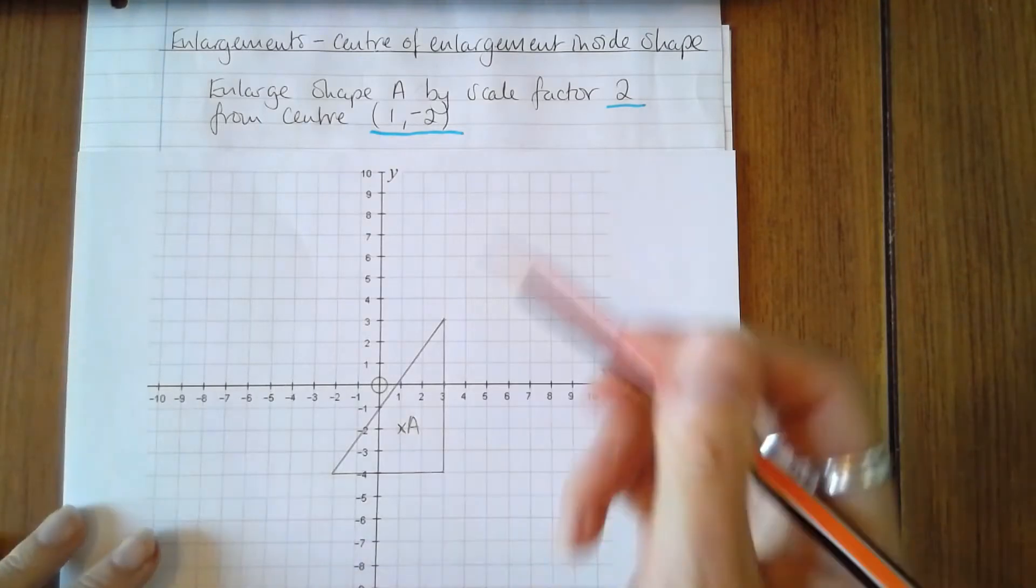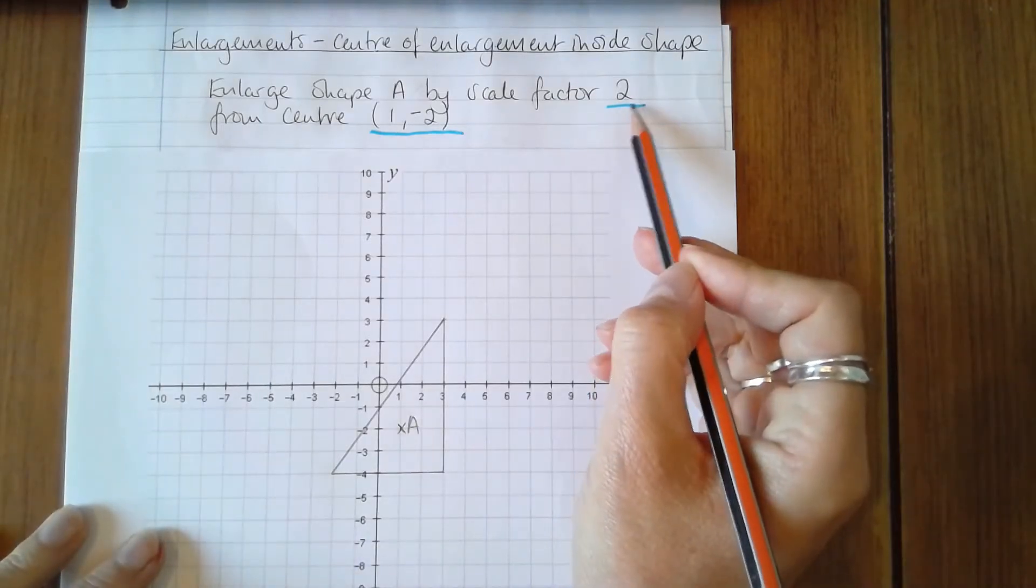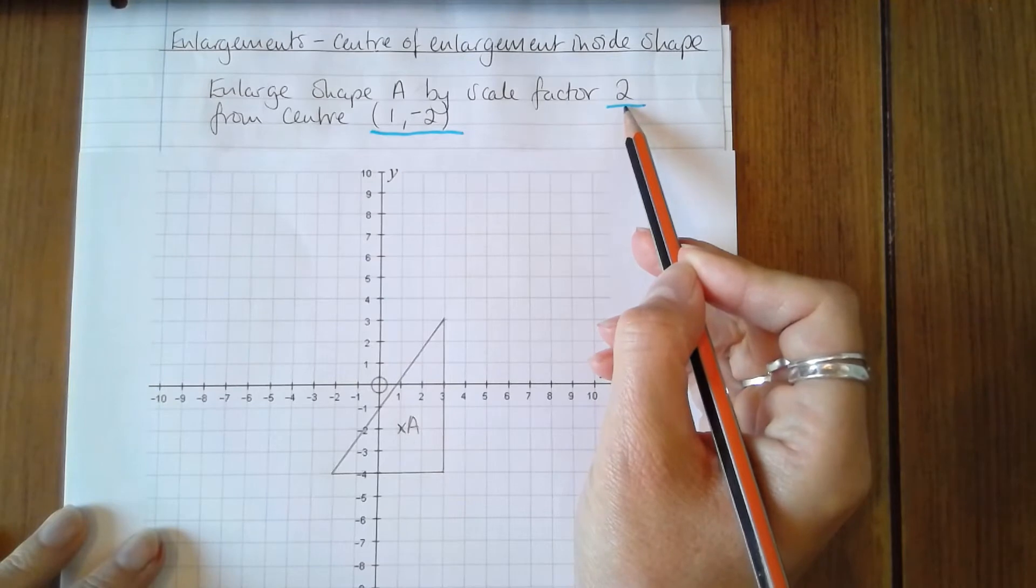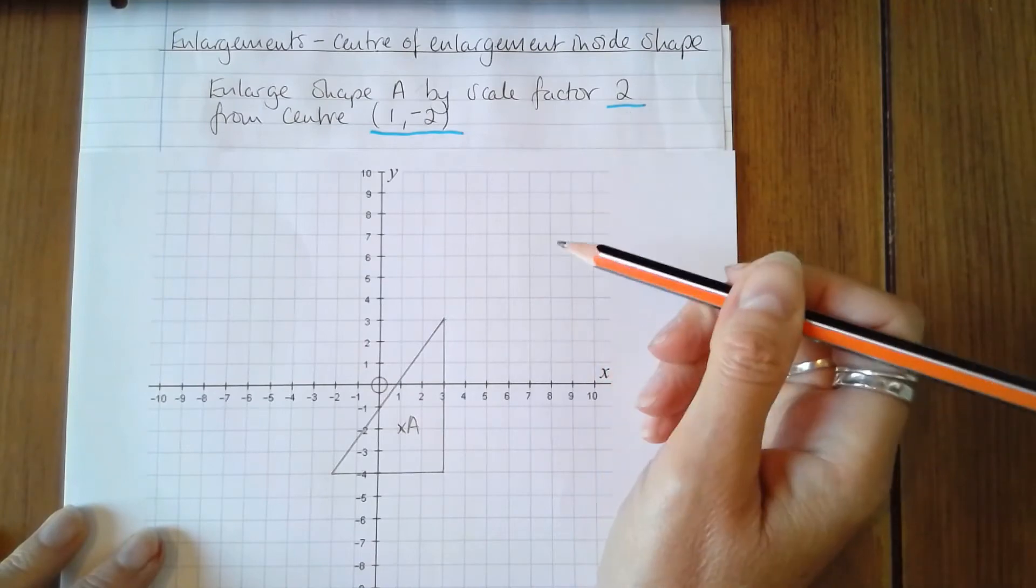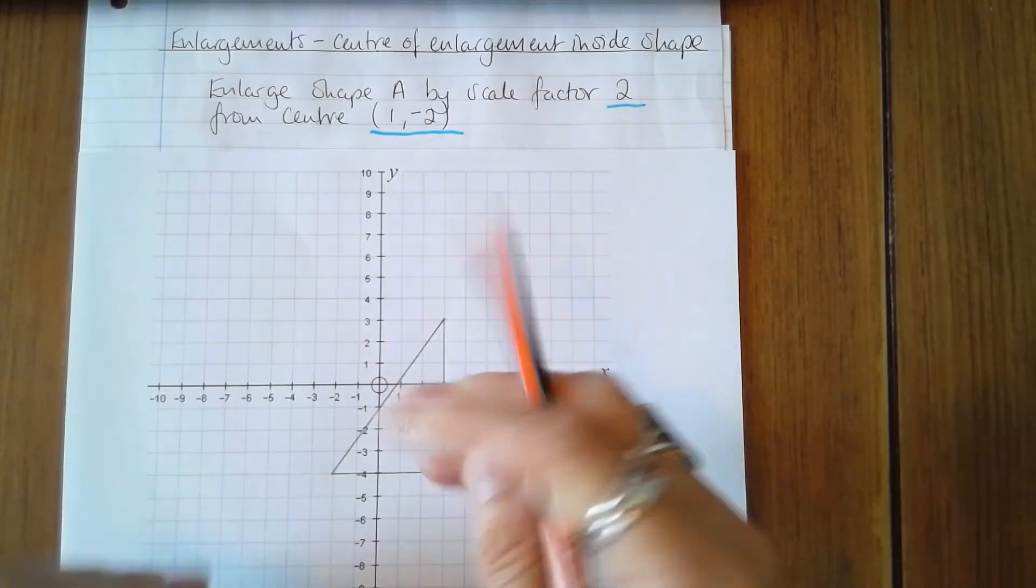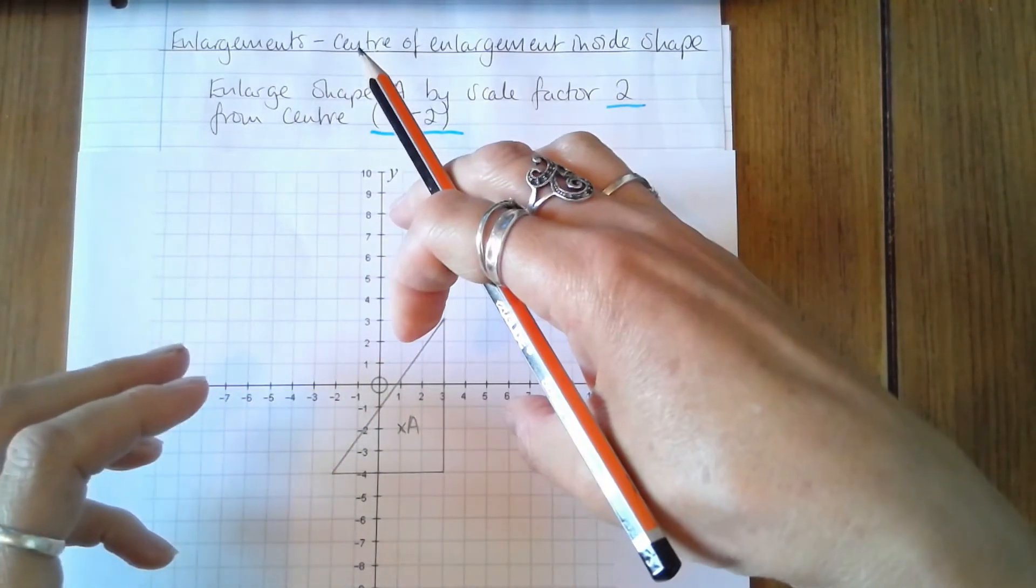The new shape must be twice the size of the original shape because the scale factor is 2. The vertices of the new shape must be twice the distance from the centre, so it's going to be expanded out like this.